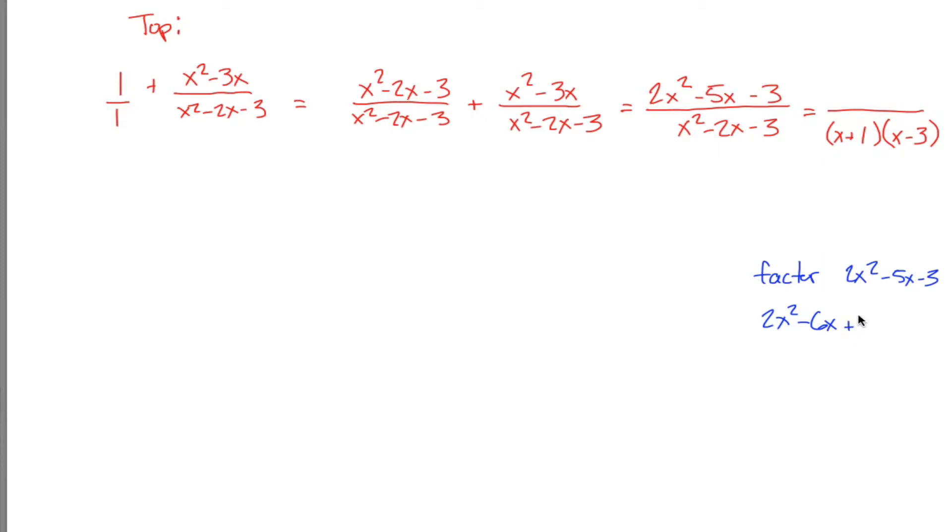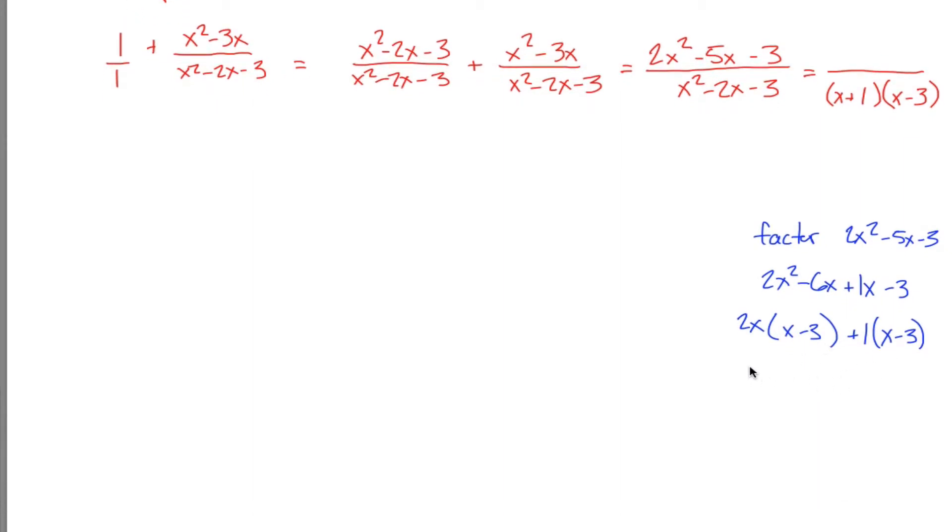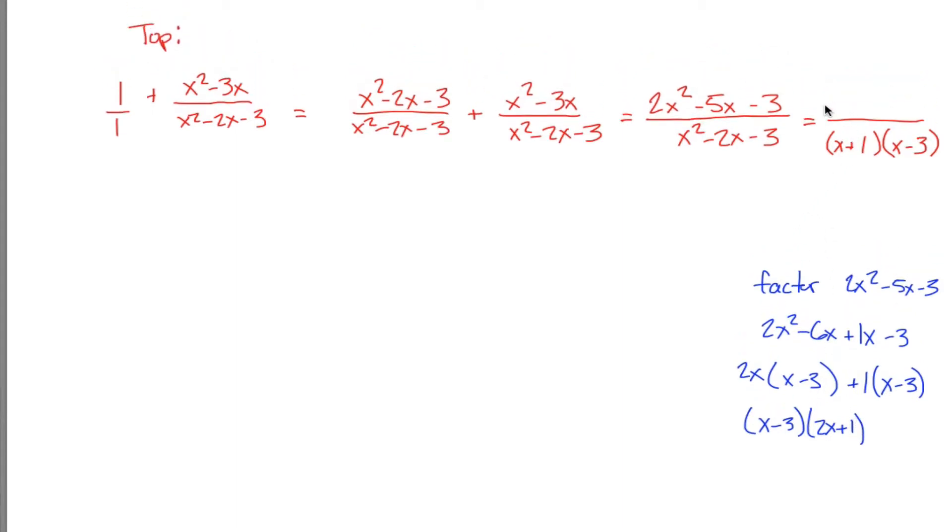I got to do this off to the side because this is the longer one, when the leading coefficient is not a 1. This is a 3-step process. First step, find two numbers that multiply to negative 6 and add to negative 5. Let's see, negative 6 and positive 1 will do. And you take those two numbers, negative 6 and positive 1, and you replace the coefficient on the x term with those two numbers. What you now have are four terms so you can factor by grouping.